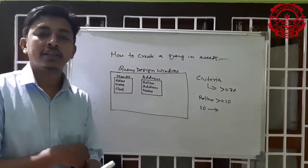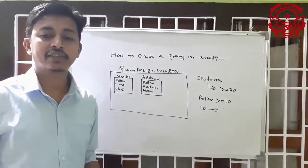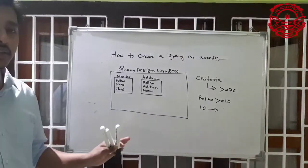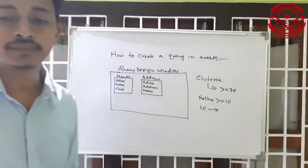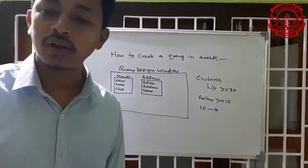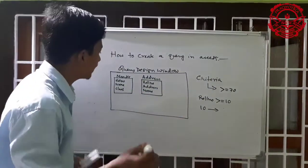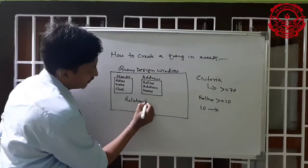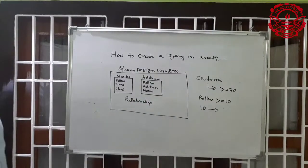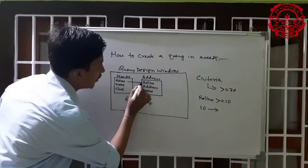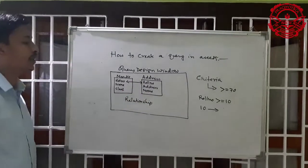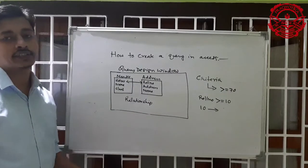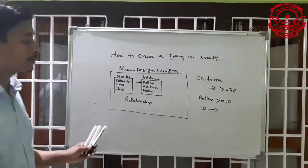So in this way you can create your query and select fields and also give conditions. After selecting the two tables, there can be a relationship. If you have two tables you have to first create a relationship, otherwise the data will not display correctly. The roll number in the marks table and the roll number in the address table — that's why we have to create a relationship.